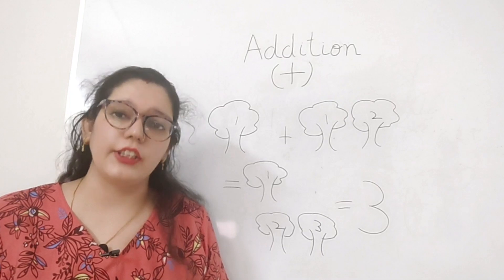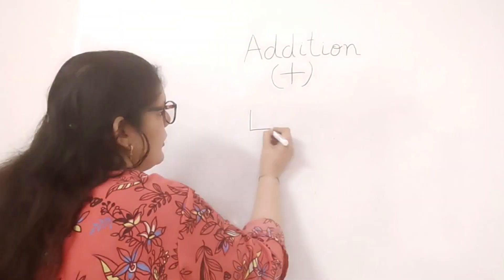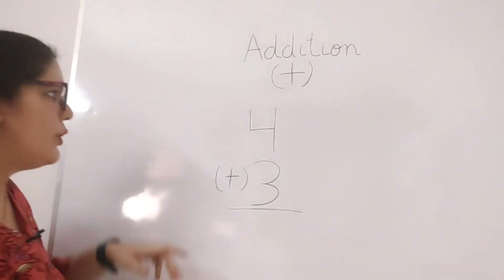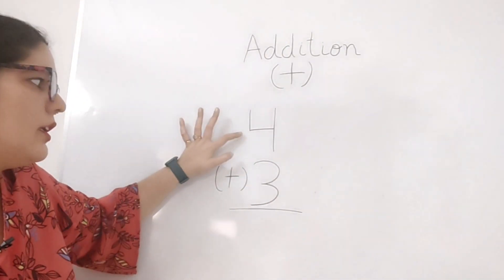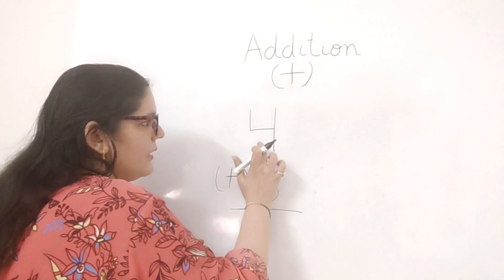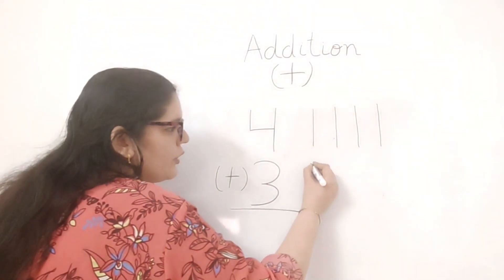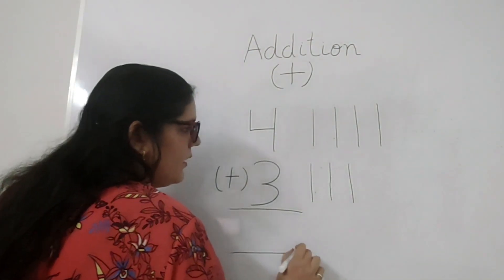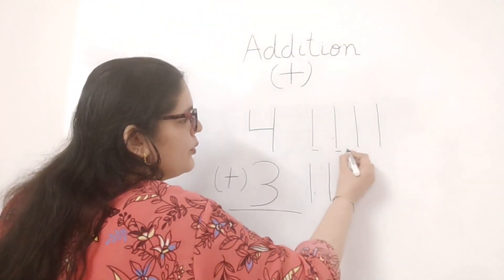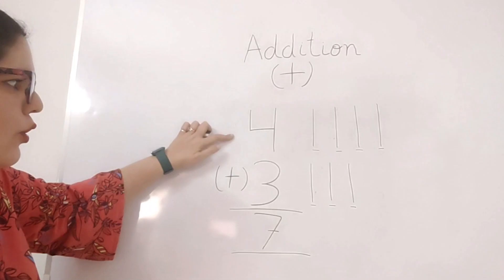Now you know what addition is. We will now see how to add digits or numbers. If I want to add four plus three, we will draw some lines — four lines for four and three lines for three. Then we count all the lines: one, two, three, four, five, six, seven. So the answer will be seven — four plus three is seven.